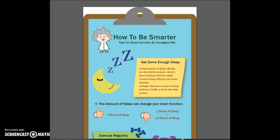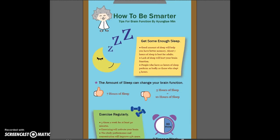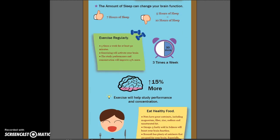The first section is about what is a good amount of sleep for your brain. Seven hours of sleep is the best, while five hours or more than ten hours is the worst. The second section is about exercising — if you exercise regularly, your brain function will increase 15% more.